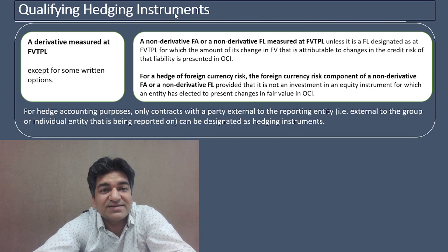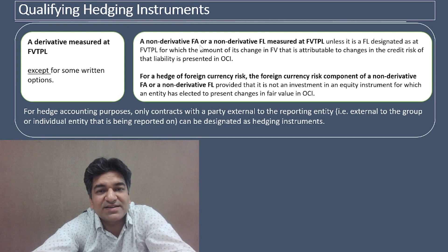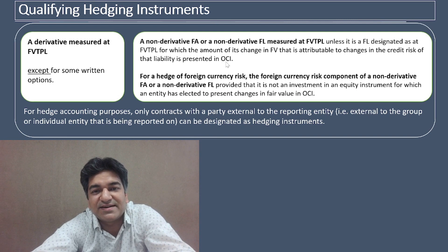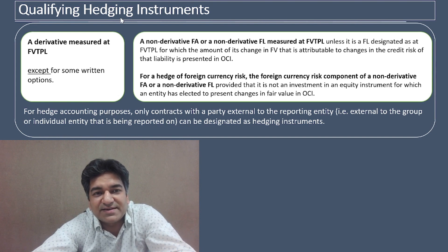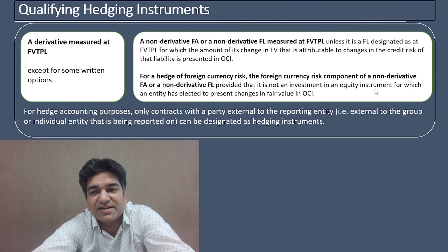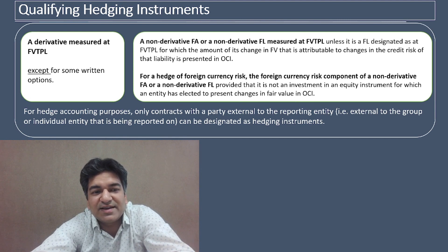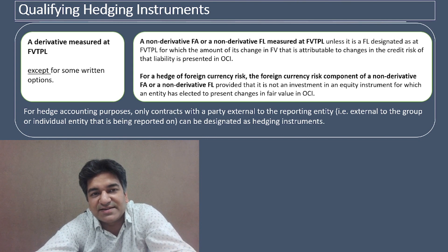Qualifying hedging instruments include: a derivative measured at fair value through P&L, and a non-derivative financial asset or liability measured at fair value through P&L — with the exception where the amount of change in fair value is presented in other comprehensive income. In the case of a hedge of foreign currency risk, the foreign currency component of a non-derivative financial asset or liability may be designated as a hedging instrument, provided it is not an investment in equity instrument for which the entity has elected to present changes in OCI. Only contracts with a party external to the reporting entity can be designated as hedging instruments.